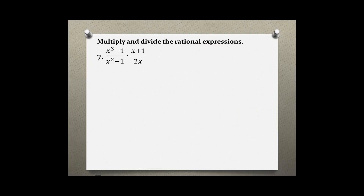Multiply and divide the rational expressions. This is problem number 7 and it says x cubed minus 1 over x squared minus 1, times x plus 1 over 2x.